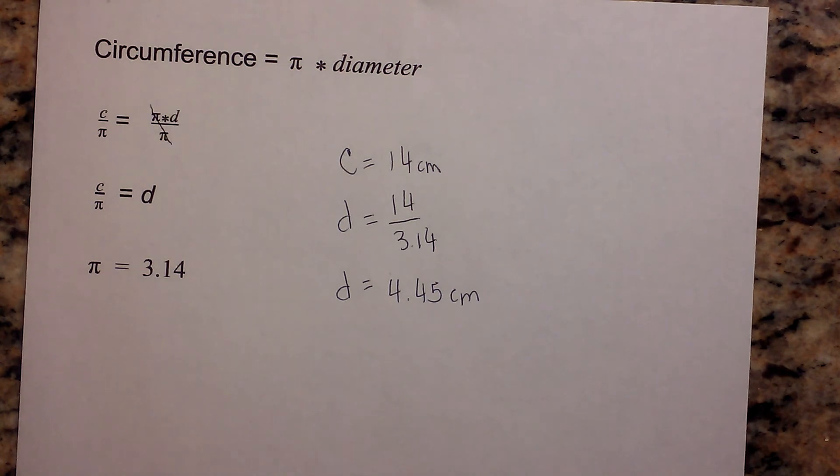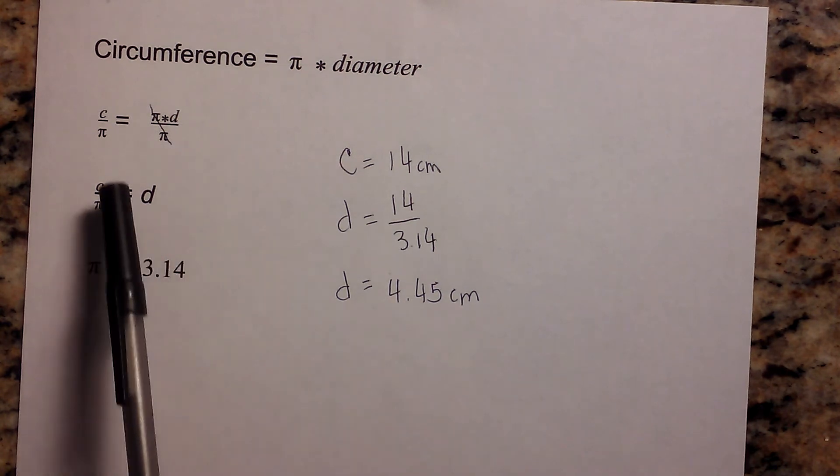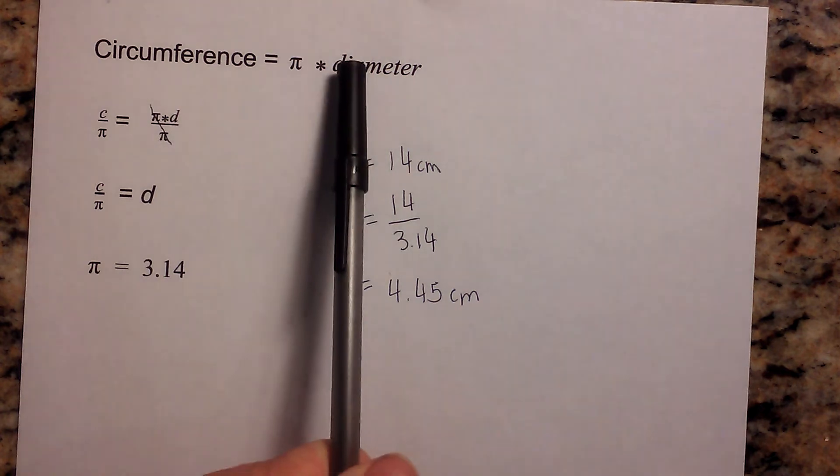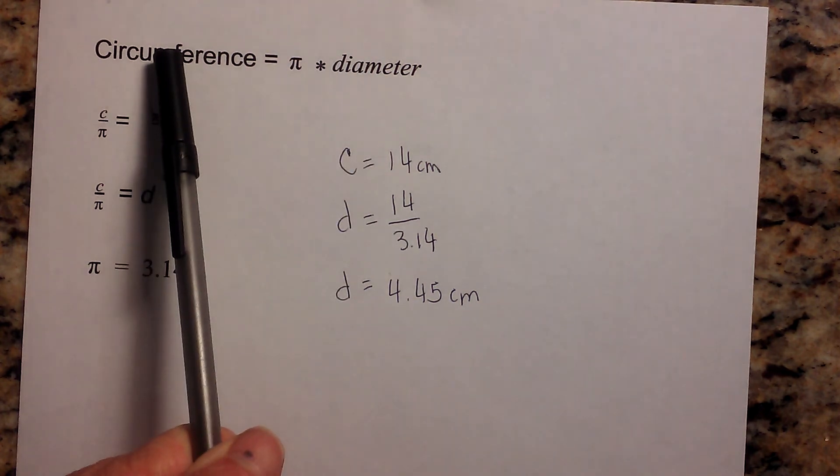Okay, so there we go. It's a simple formula. If you have the circumference to find the diameter, just divide the circumference by pi.